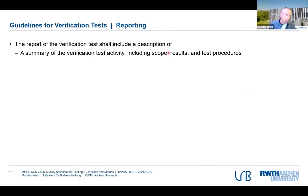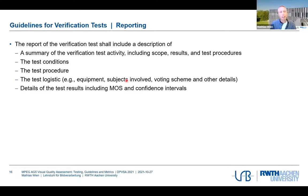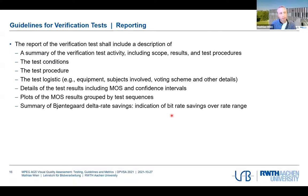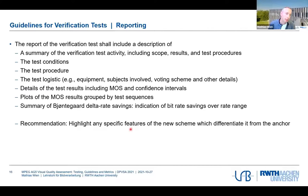The reporting includes all activity: scope and results, test procedures and conditions, test logistics, equipment used, number of subjects, voting method, data processing, how MOS values were achieved, confidence intervals, plots of results, and a summary of Bjøntegaard delta rate savings — which tell you the overall average savings over the range of rates for a sequence. Any specific features or aspects are highlighted to inform the outside world about these specific features.